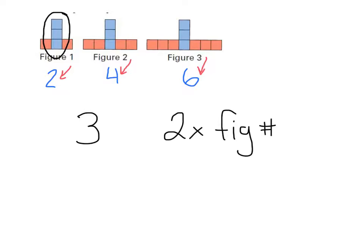In figure one it's two, in figure two it's four, in figure three it's six. What I have to keep in mind is if I'm looking for the total number of blocks, I have to add all the blocks together. So I'm going to always add my three blocks, my three blue blocks, to whatever the number of red blocks is.